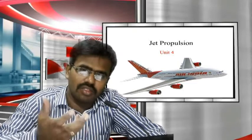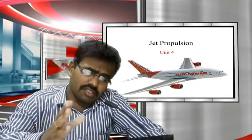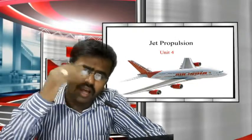Hello students, our fourth unit is jet propulsion. What is meant by jet propulsion? Jet propulsion can be attained by jet engines. These jet engines differ from the reciprocating engines. Jet engines are constructed on the basic principle of Newton's Third Law - every action has an equal and opposite reaction. This is called Newton's Third Law.